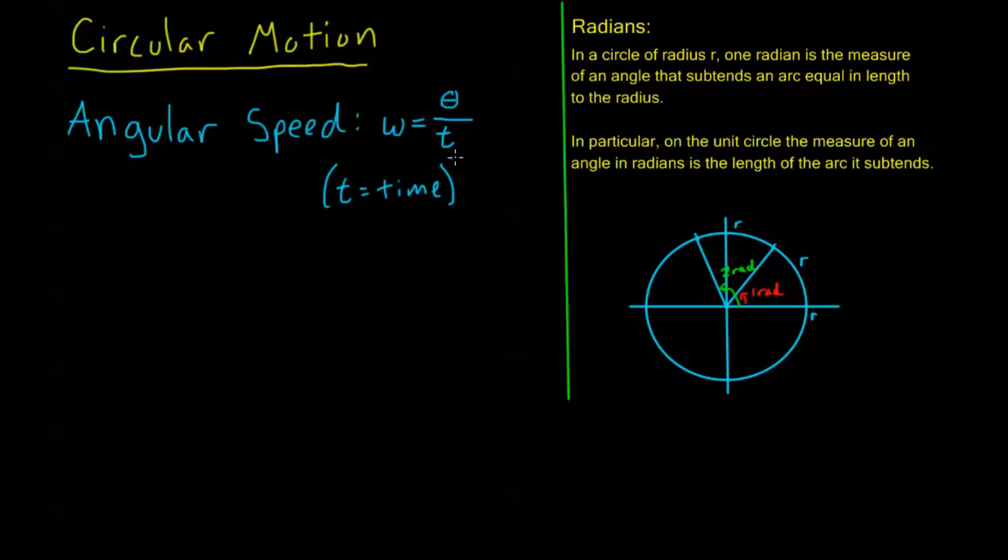Now, this depends on, you know, we can, we'll have to do conversions later, and again, we'll do examples in the next video. But this could be, you know, maybe I do one rotation every minute, so my angular speed would be, my angular speed would be two pi radians over one minute, or two pi radians per minute, okay?